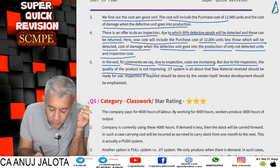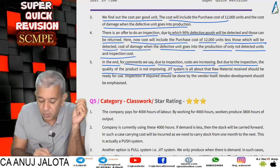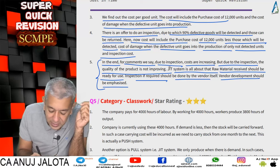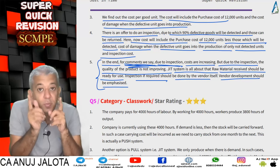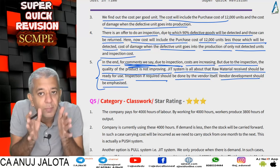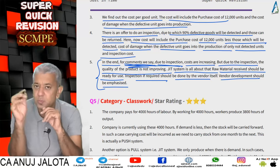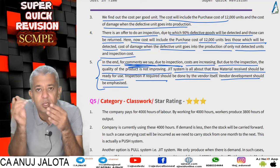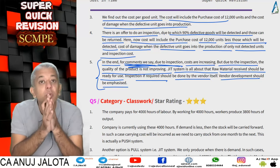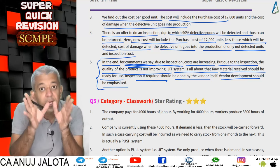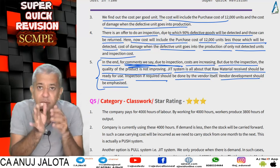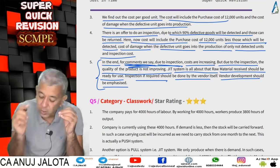JIT is all about that: raw material received should be ready for use. Inspection, if required, should be done by the vendor's staff; vendor development should be there. Due to inspection, quality of the product does not improve — only cost is increasing. Under JIT, inspection should be done by the vendor. You charge extra but the vendor does the inspection, so material is ready for use the moment it is delivered. It is always better to do vendor development — educate the vendor, so material is ready for use at the point of use, delivered at the right time and place.